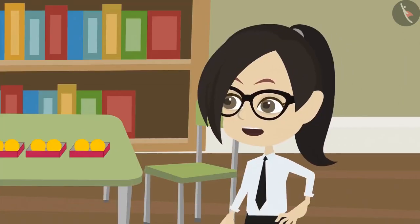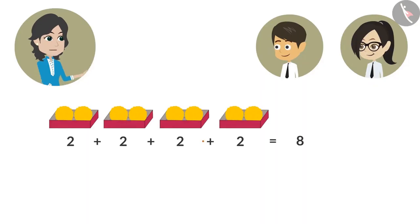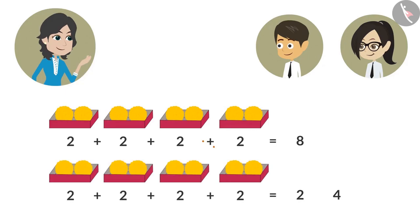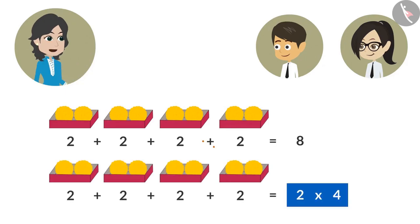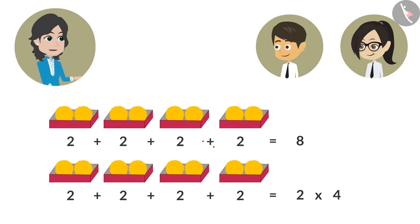But why did you multiply? We are adding them together to find the total number of ladoos. See Vandana, to know the number of ladoos in four boxes, you have added two four times. Instead of this, you can multiply two by four. Multiplying two four times means adding two four times. That is why both answers are the same, which is eight.